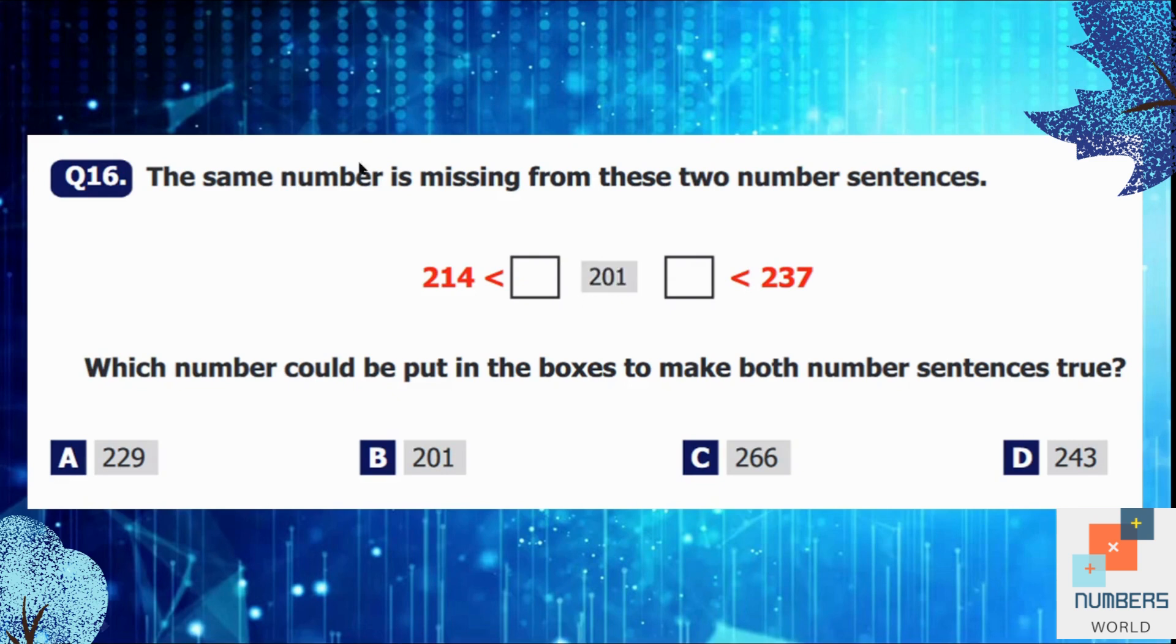Option B is 201. Is it greater than 214? No it is not. So we can't choose it as our answer. Now option C is 266. So is it greater than 214? Yes it is. But is it less than 237? No it's not, because its tens place is greater than the tens place of 237. So no. Now the last option is 243. Is it greater than 214? Yes it is. But it is not less than 237. So option D is also not appropriate. Only the option A is.